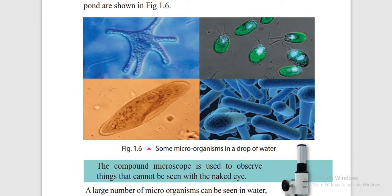The first man who observed microorganisms is Anthony van Leeuwenhoek. He made the microscope himself and observed the microorganisms. The microscope is the instrument used to observe microorganisms.